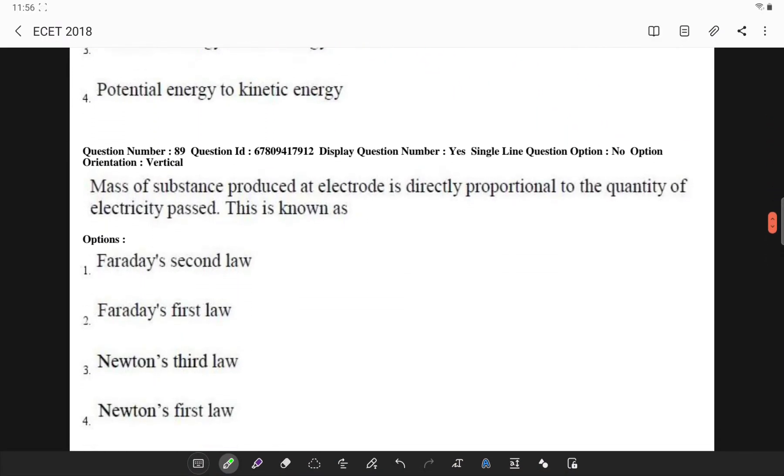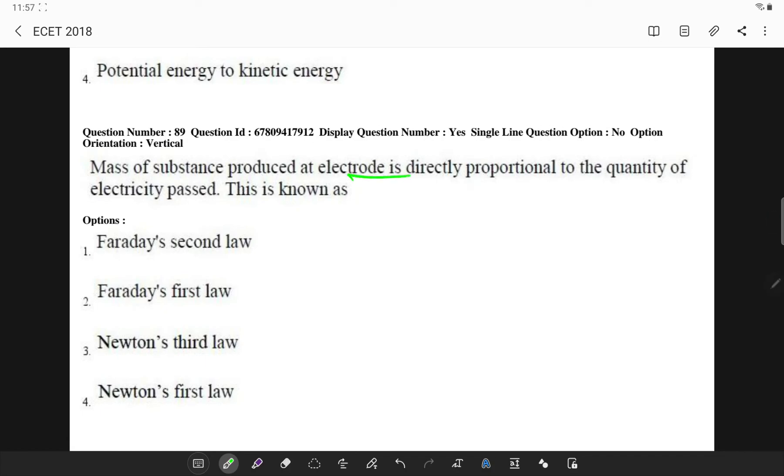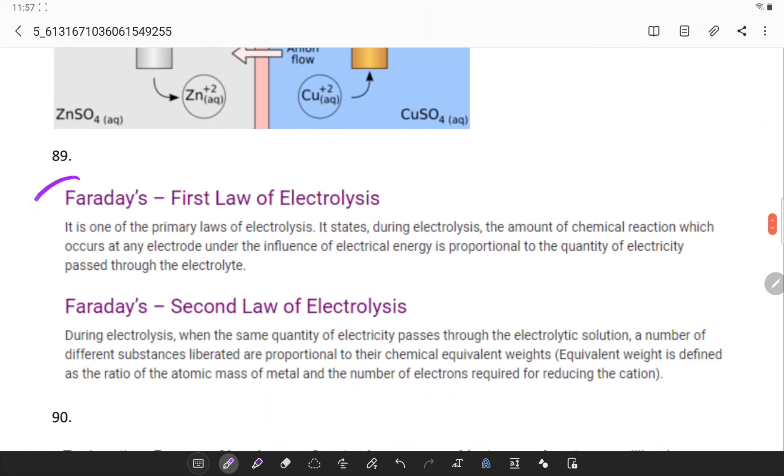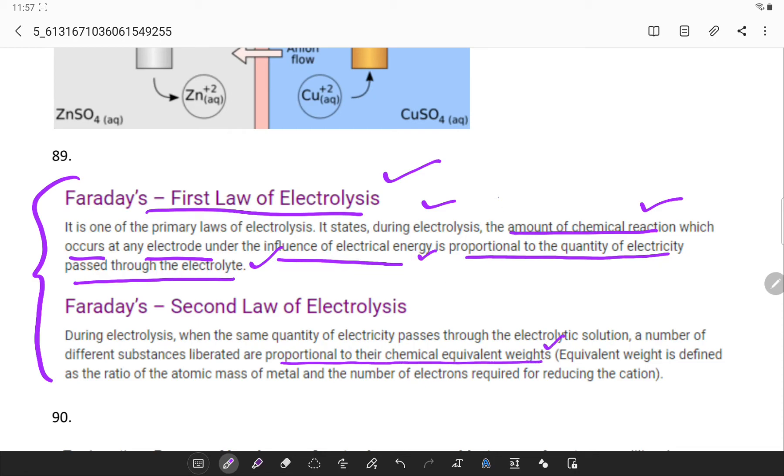Mass of a substance produced in an electrode is directly proportional to the quantity of electricity. This is earlier paper also, it is nothing but Faraday's first law. These two laws are very important, every year you are getting question on this. In Faraday's first law, the amount of chemical reaction during electrolysis at any electrode under the influence of electrical energy is proportional to the quantity of electricity passed through it, whereas in the second case it will be proportional to the chemical equivalent weights.